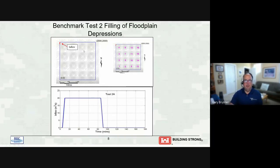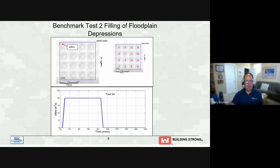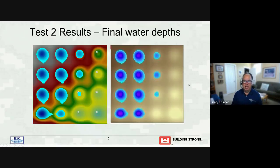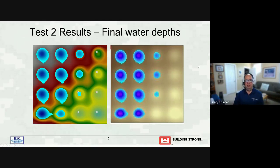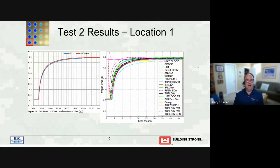Benchmark two I call the egg carton test, because it's basically a rectangular terrain that slopes from left to right and from top to bottom, but there are these holes in the terrain — like egg carton locations. Water is released at the upper left corner and you see how far it goes. The inflow goes from zero to 20 cubic meters per second and then back down. On the left is the RAS result, and on the right is what they considered the expected result — the quote-unquote good answer. You can see RAS has water in all the same egg carton holes at about the same magnitude.